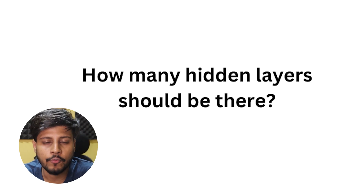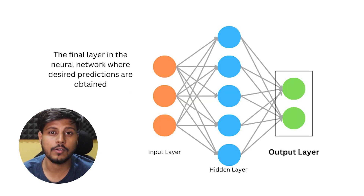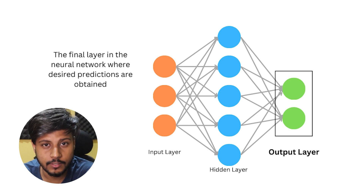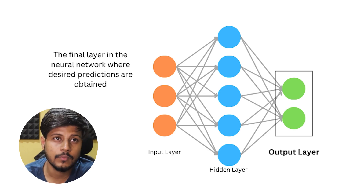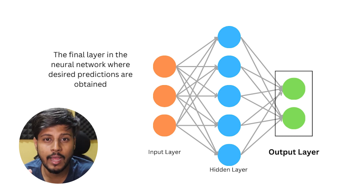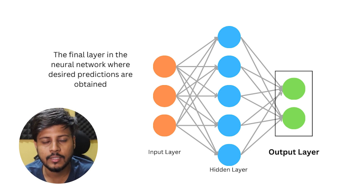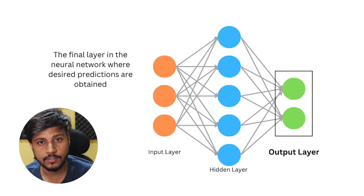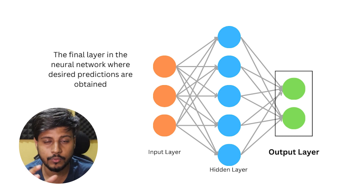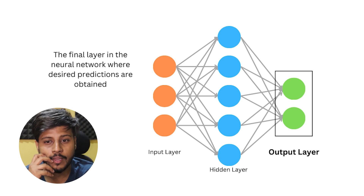We also have the output layer, which is the final layer where you get the result. If you are building a binary classification, you will have a single neuron in the output layer. But if you are building a multiclass classification, you will have one neuron for each class. This is how the number of neurons in the output layer is determined.